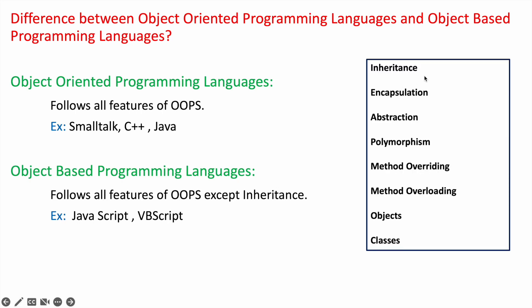The features of the object-oriented programming system are: inheritance, encapsulation, abstraction, polymorphism, method overloading, method overwriting, objects, and classes. These are all the features of the object-oriented programming system, and languages that follow all these features are object-oriented programming languages.